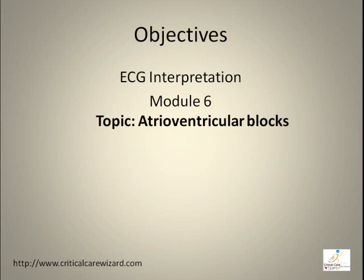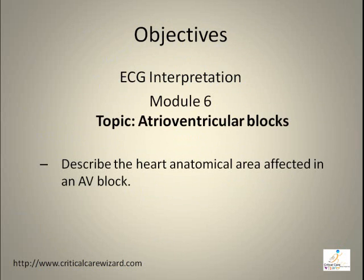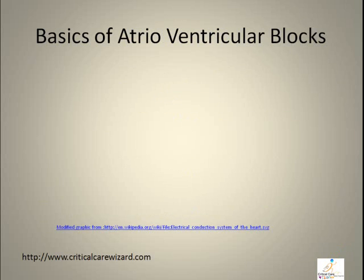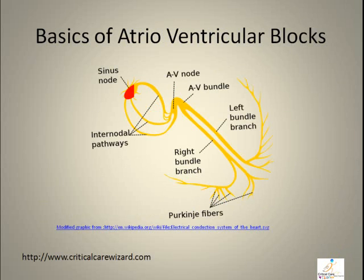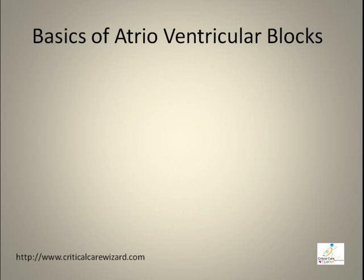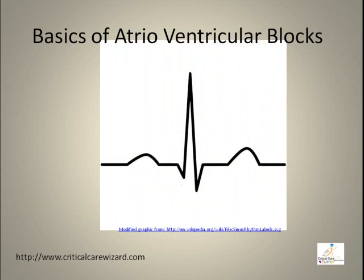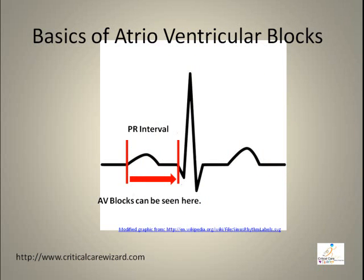The topic for this module is atrioventricular block, also known as the AV block. I will attempt to describe and identify the heart anatomical area affected in the AV block, describe the different types of AV blocks, and describe the lethal AV blocks. AV block refers to conduction abnormalities from the SA node going to the AV node, and is an ECG conduction abnormality that can be seen in the PR interval and its relation to the QRS complex.